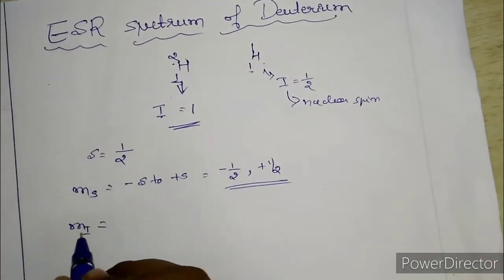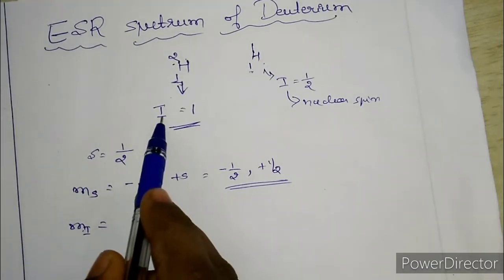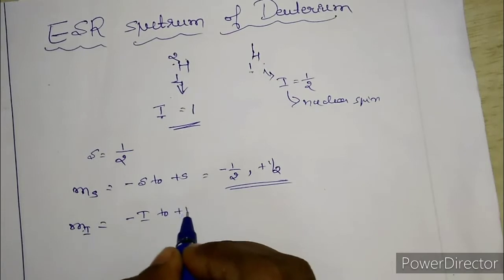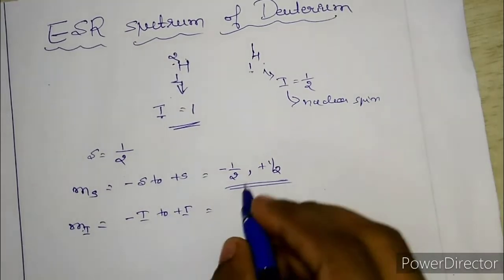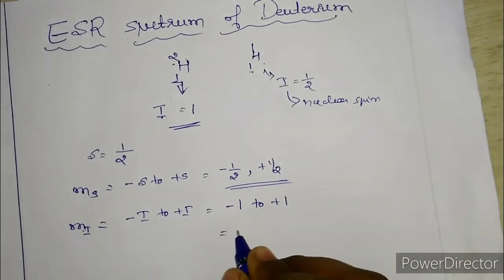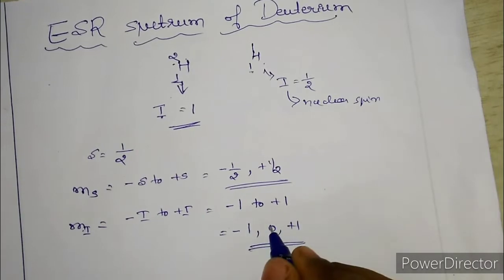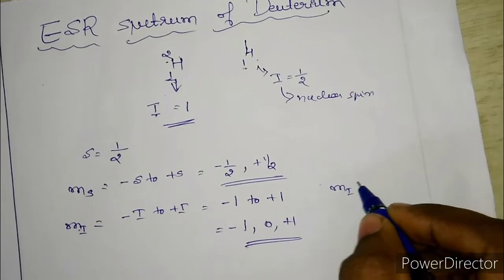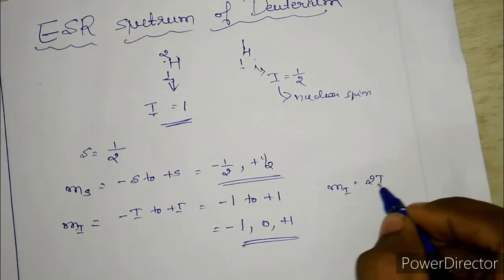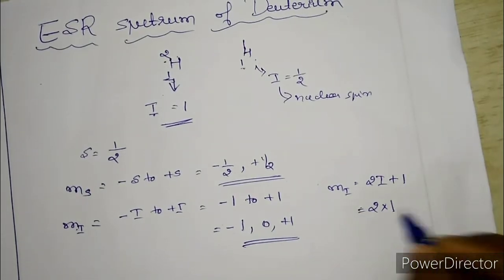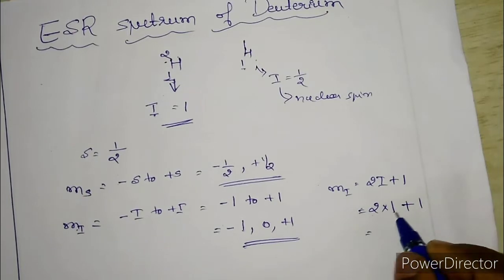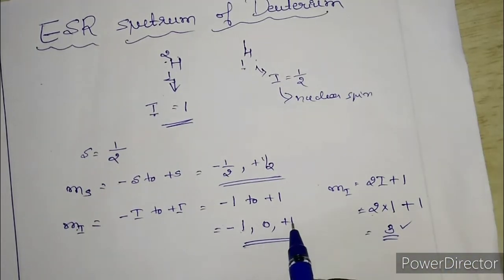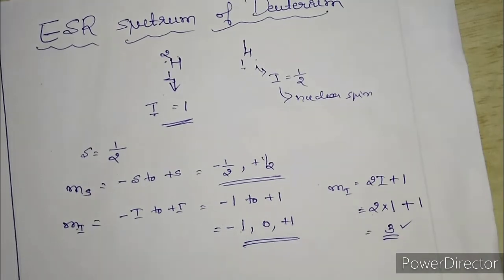mI is a quantum number related to the nuclear spin. It ranges from −I to +I. For deuterium, the possible values are −1, 0, and +1 — three mI values. The number of mI values is given by the formula 2I + 1. For deuterium, I = 1, so 2(1) + 1 = 3. So the three mI values are −1, 0, and +1.